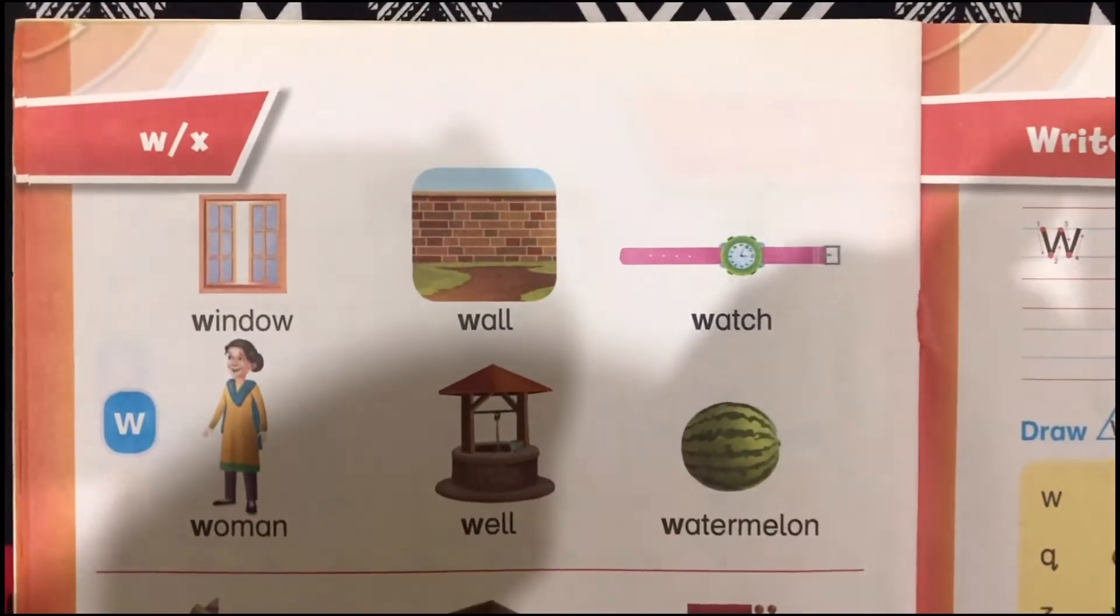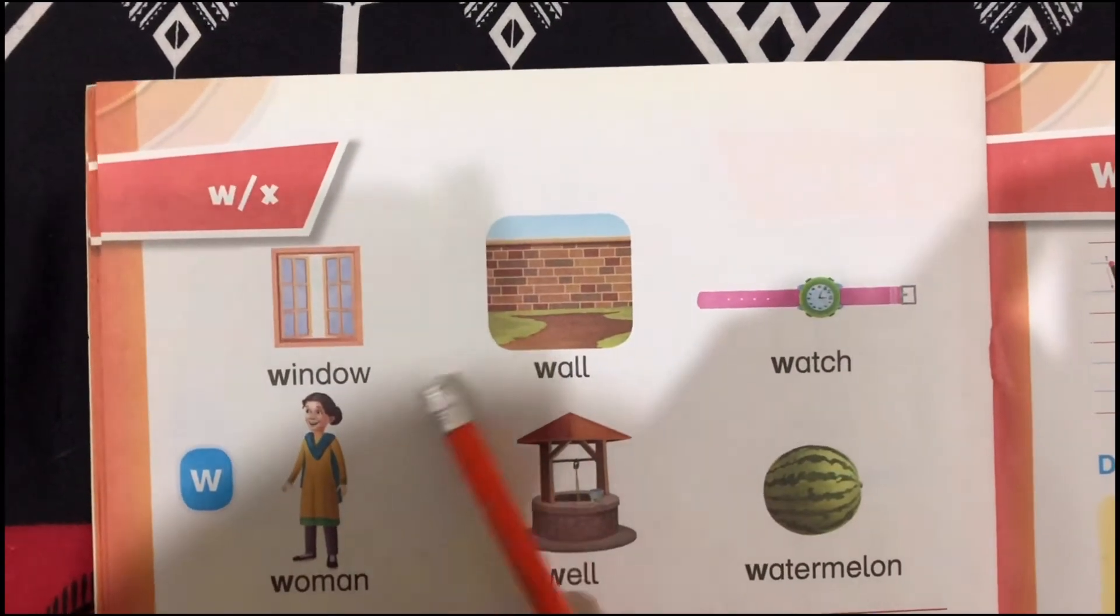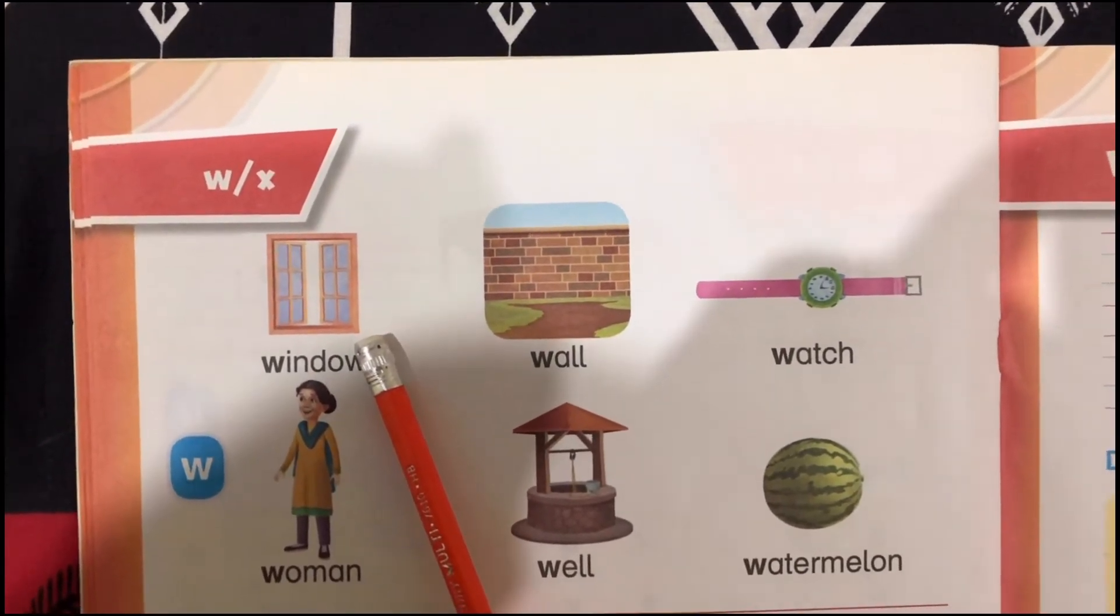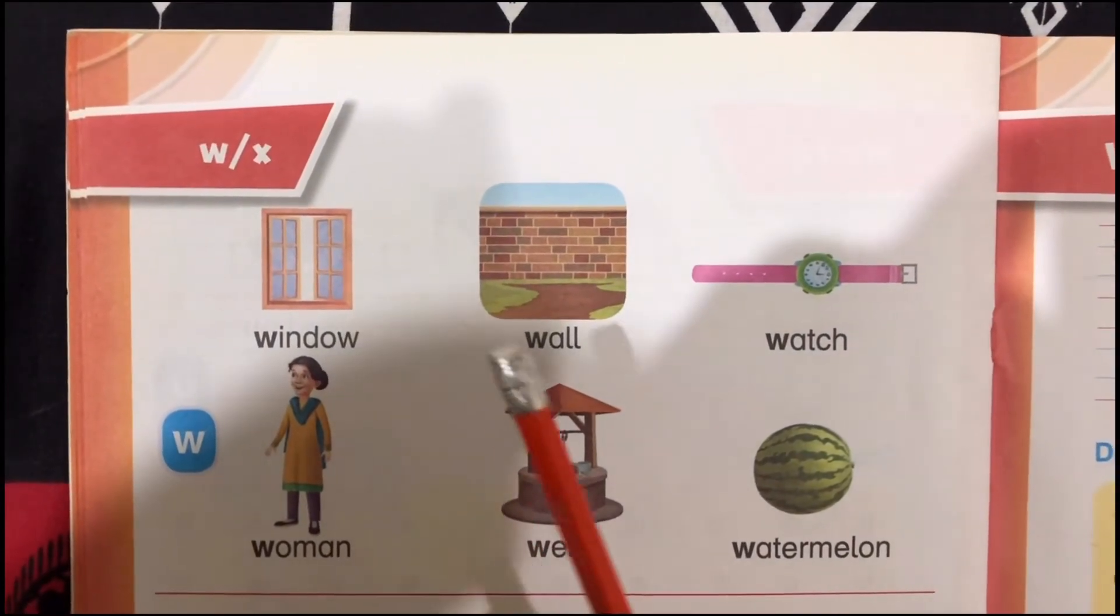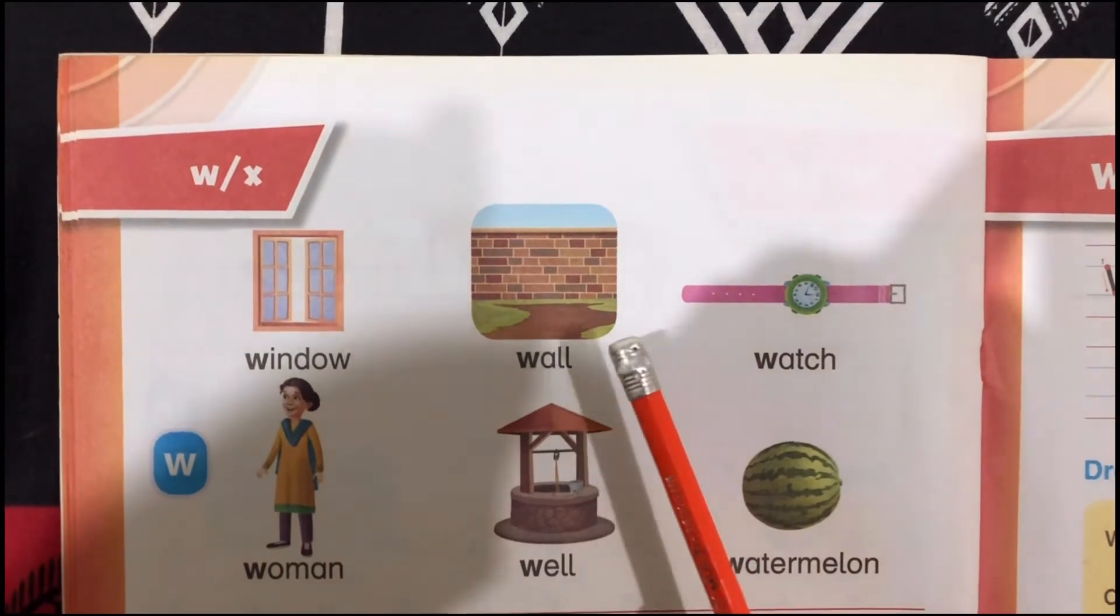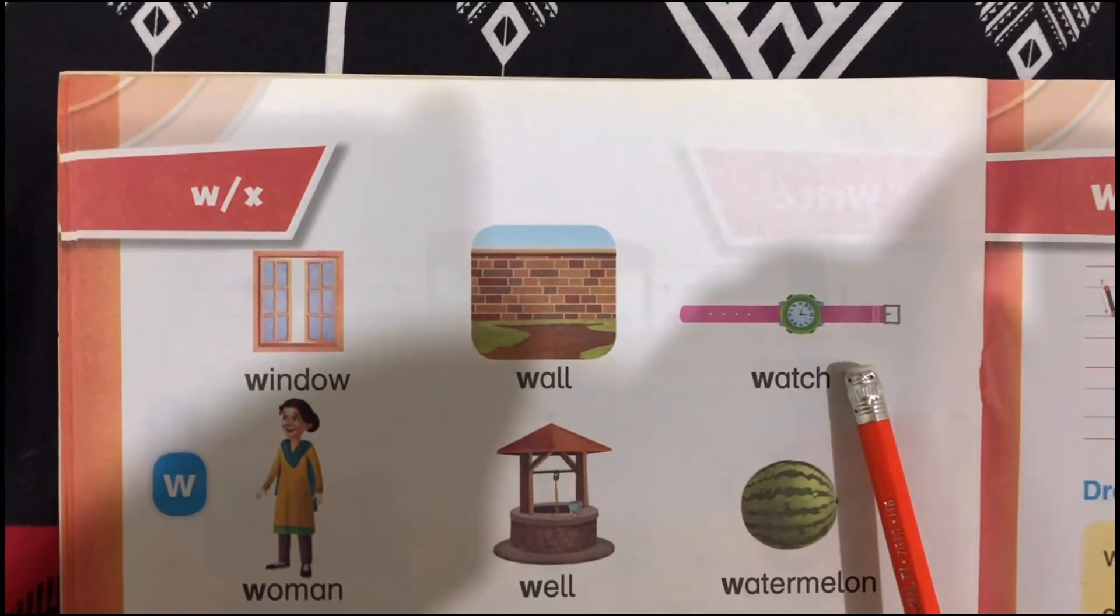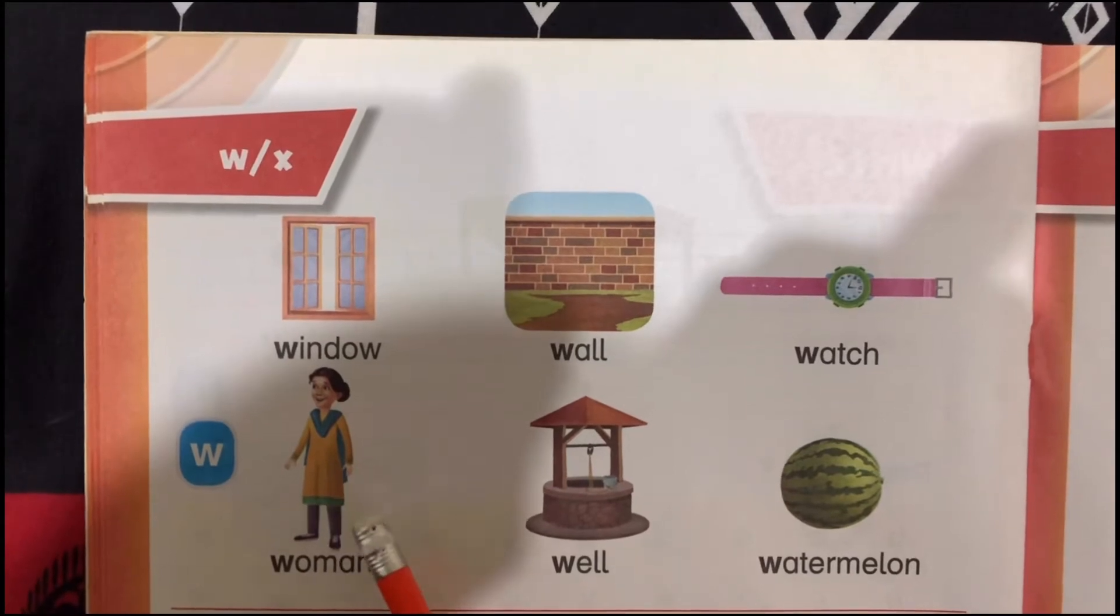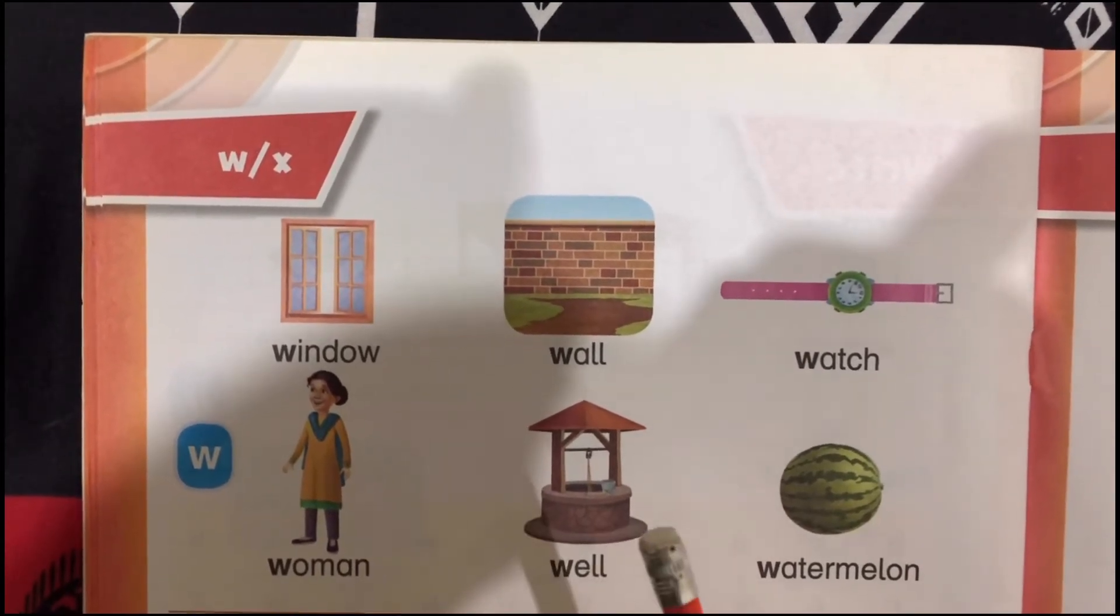Now, this is window. What is this? Window. Wall. What is this? Wall. Watch, watch, watch, watch, what. Woman, what. Woman. Well, well, well.